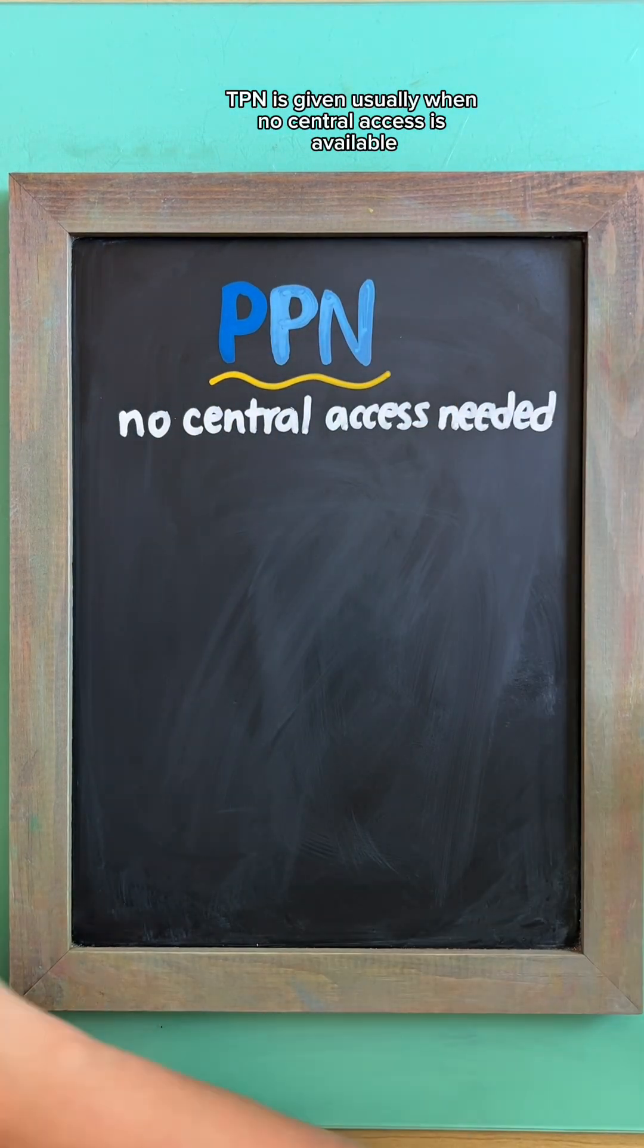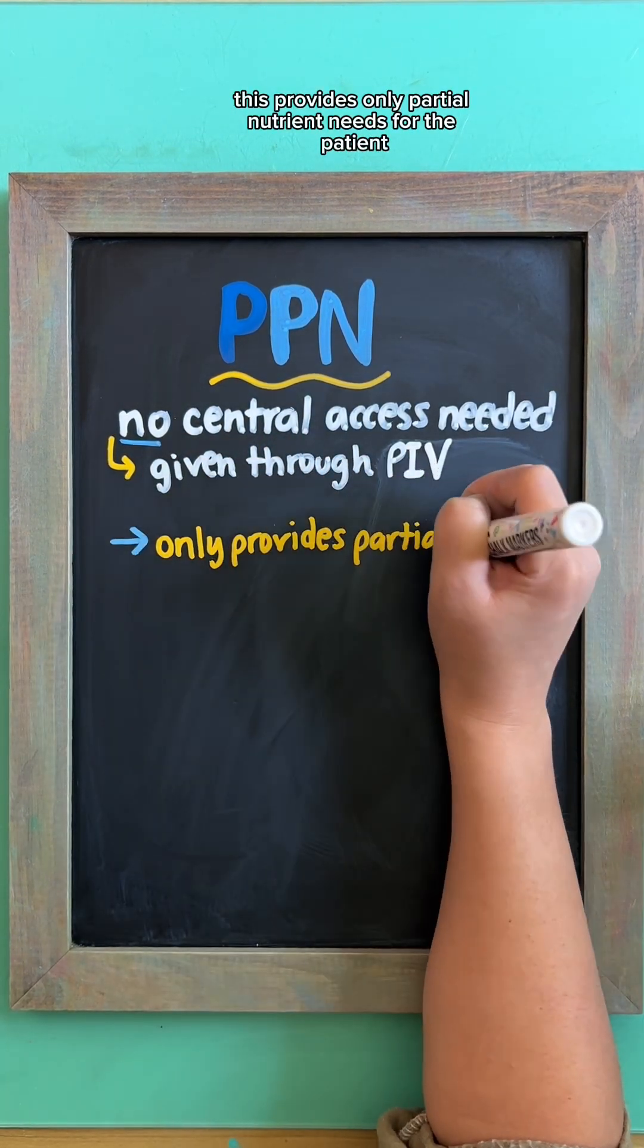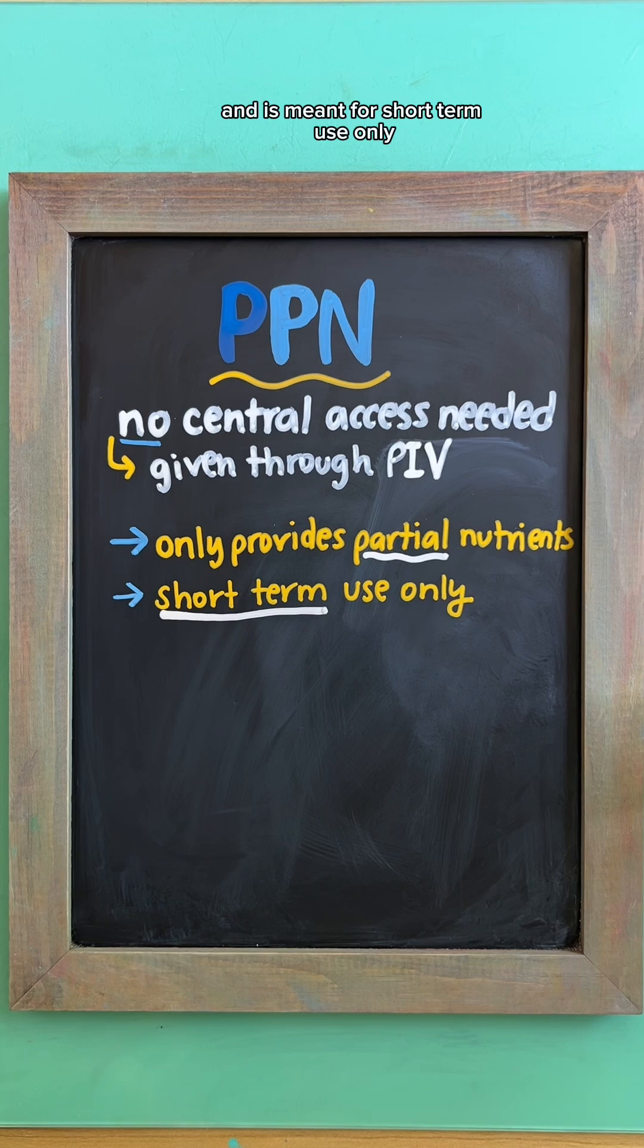PPN is given usually when no central access is available and can be given through a peripheral IV line. This provides only partial nutrient needs for the patient and is meant for short-term use only.